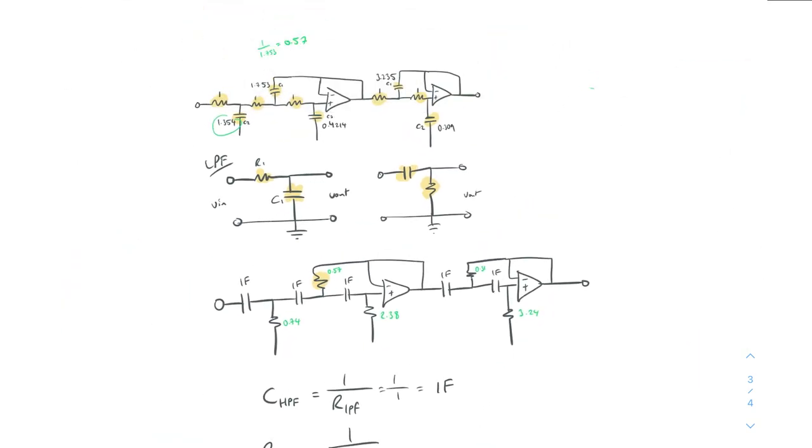So these two, this here is the low pass filter. And this here is our normalized high pass filter. And that's it. Like I said, super, super simple.